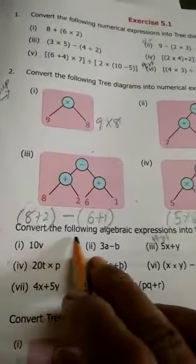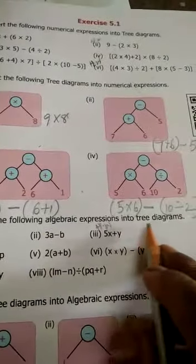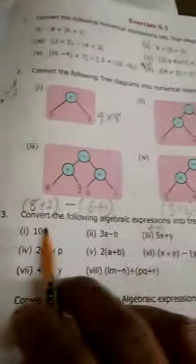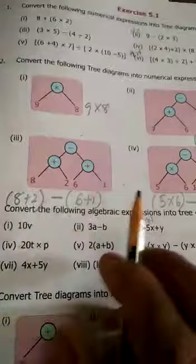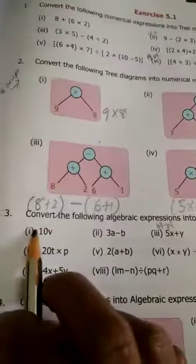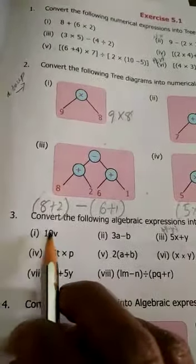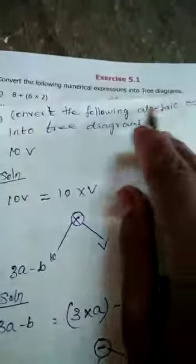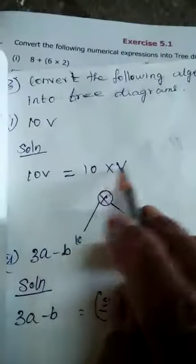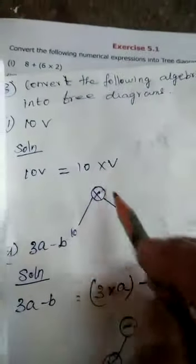Convert the following algebraic expressions into tree diagrams. Expressions are given, you draw the tree diagrams. First one: 10V. 10V means 10 into V. Take your notebook, third roman numeral, write the heading. Solution: 10 into V, so multiplication symbol.